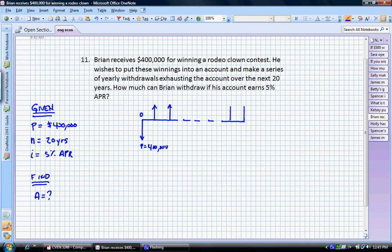So, this series of withdrawals A, which we don't know, is what's going to exhaust his account. And these occur every year at the end of the interest period, all the way to year 20. Point of view is Brian, and he is the investor.